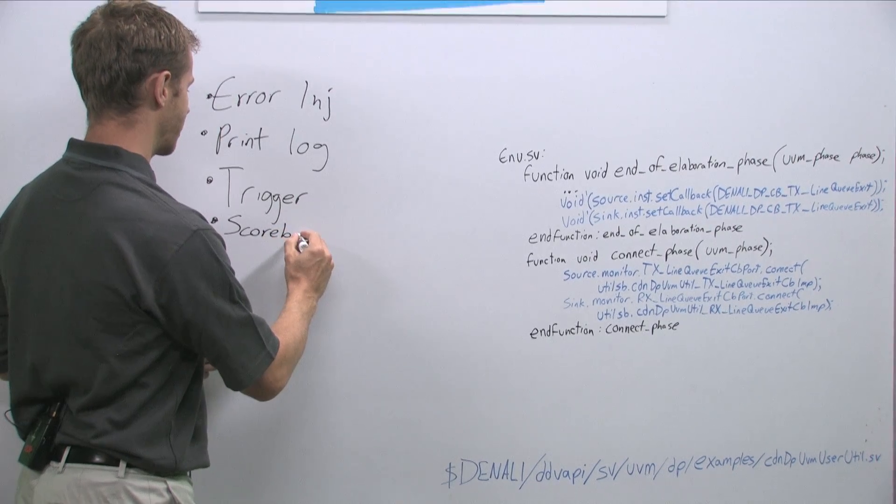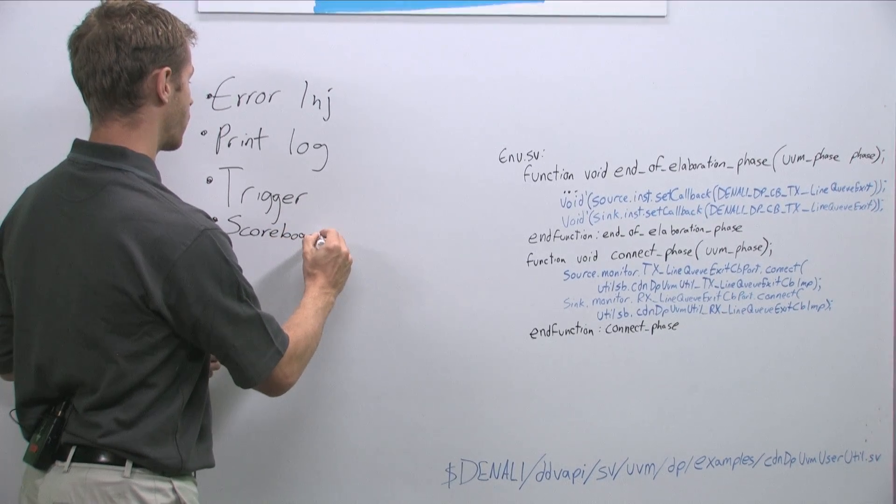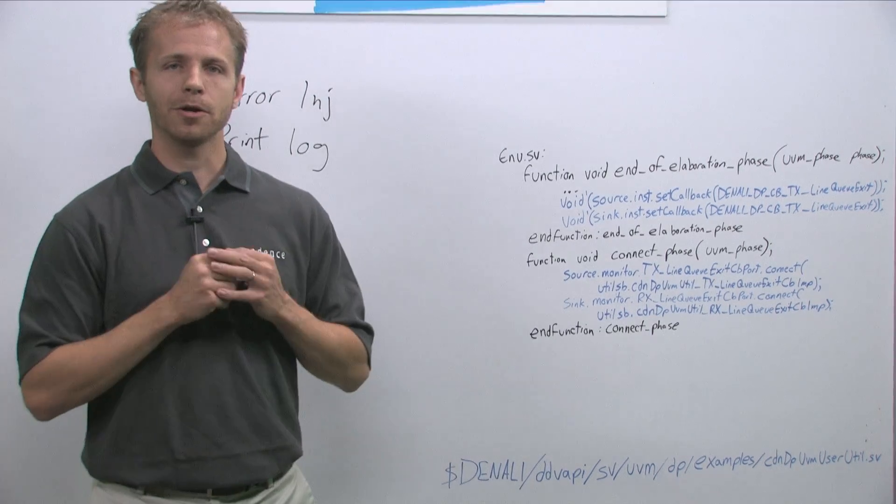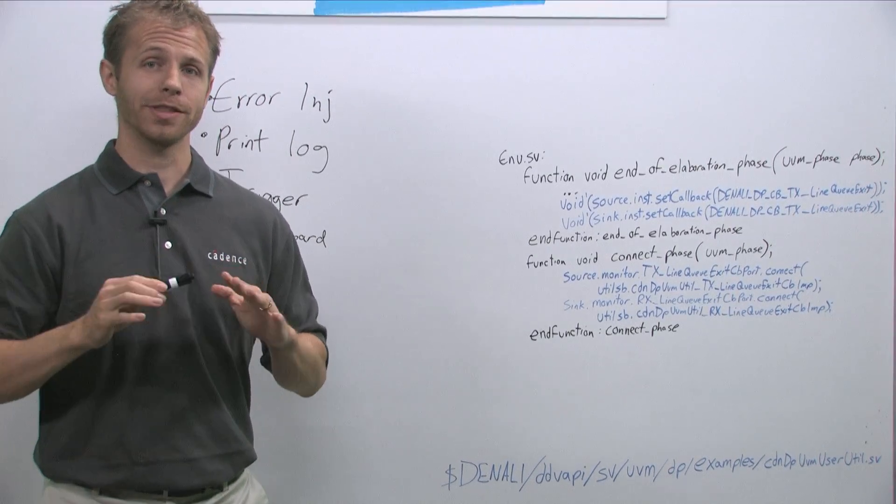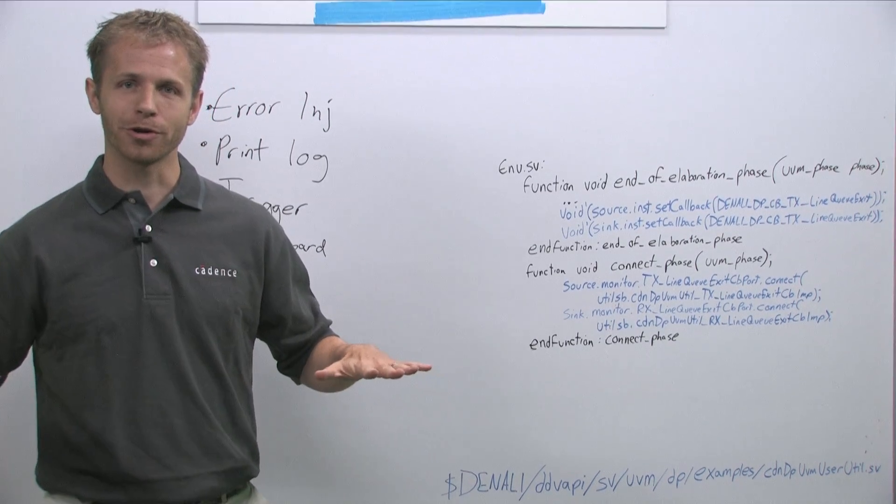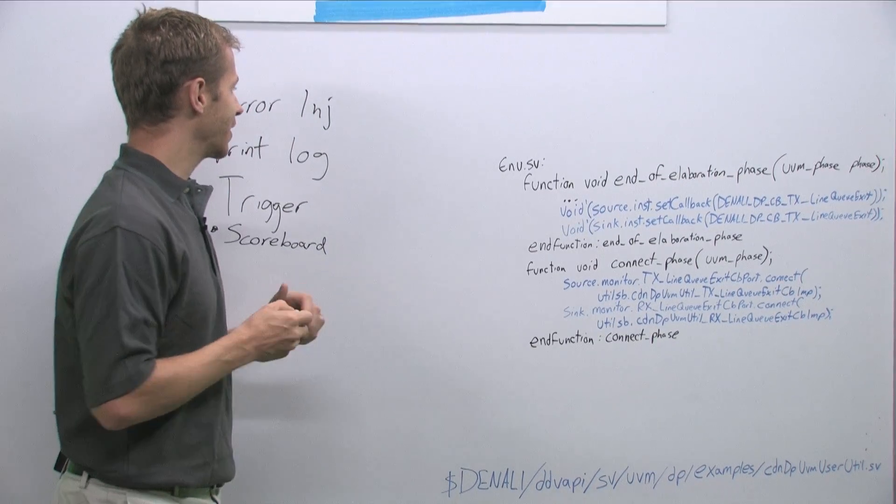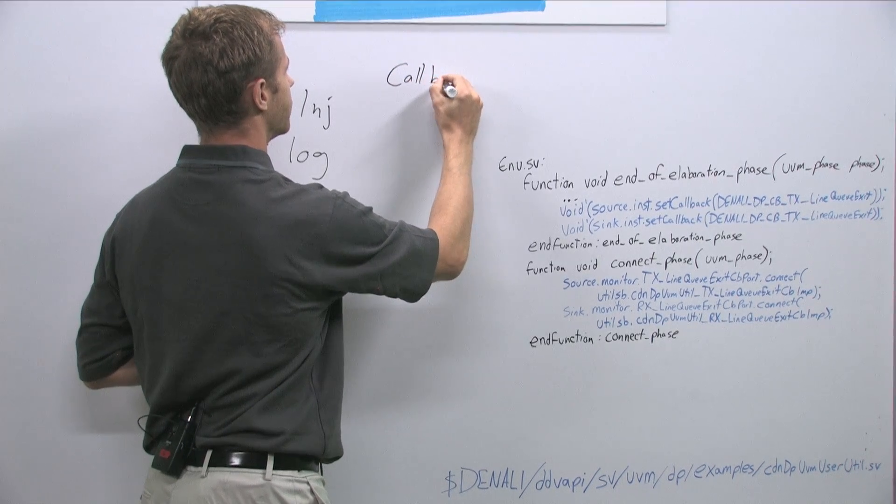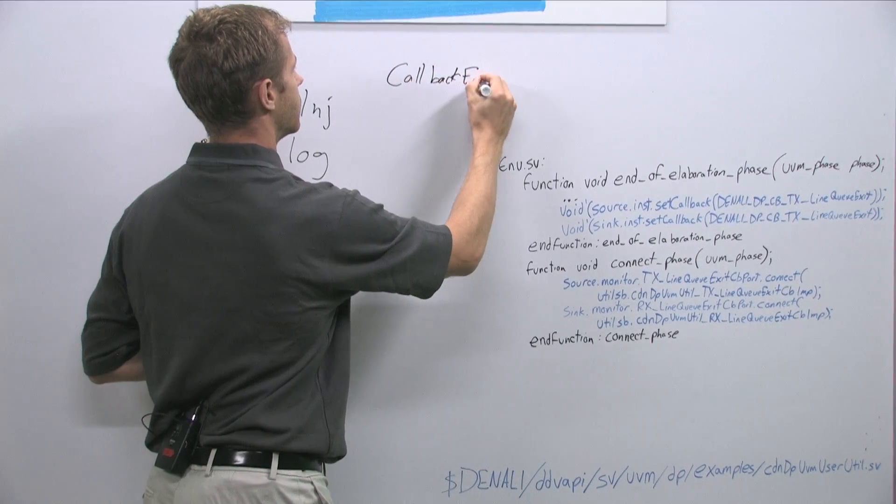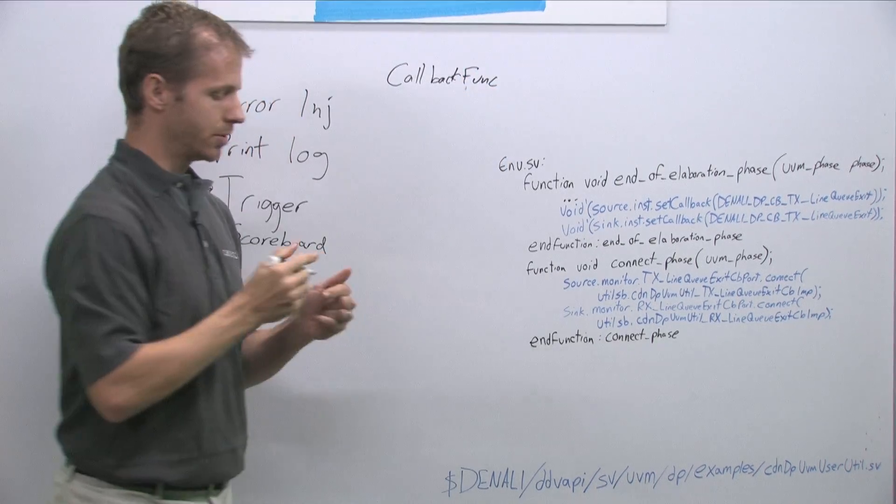With scoreboarding, actually for the callbacks themselves, when a callback is enabled the following three things happen and they always happen in the same order which is good to know. The first thing that happens is the callback function is called.